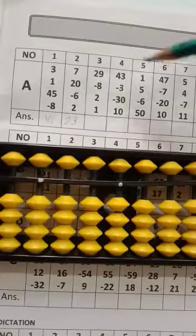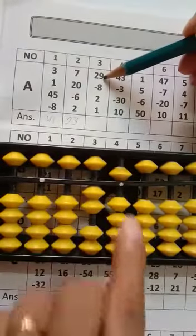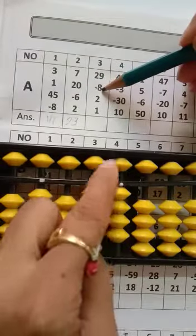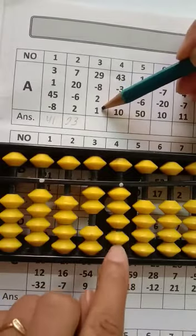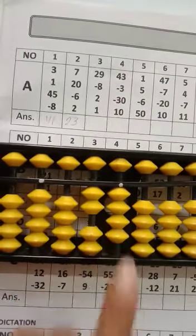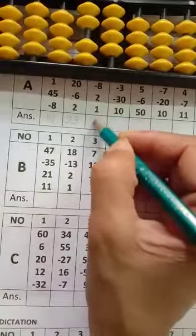Now question number 3. Start with 29. Minus 8. Add 2. Then add 1. Your answer will be 24. So we have to write down 24.